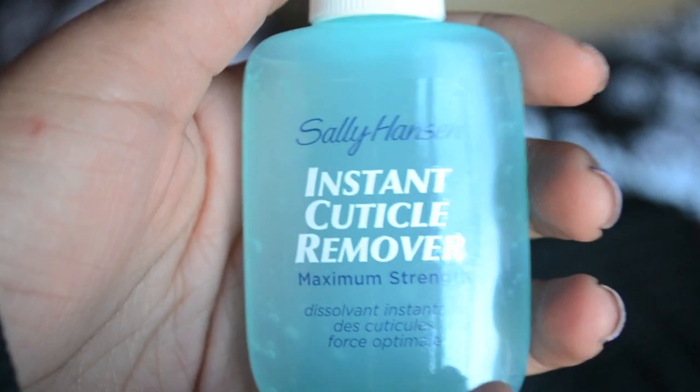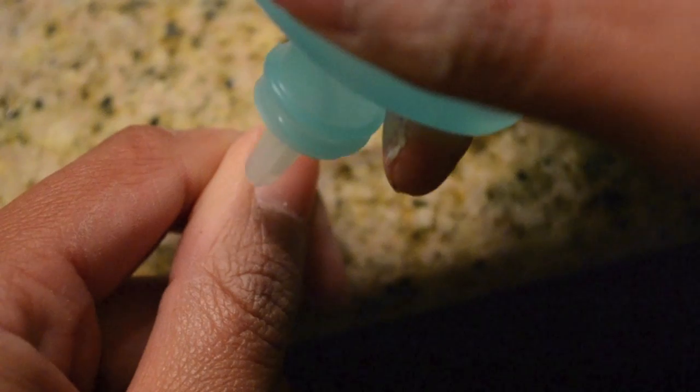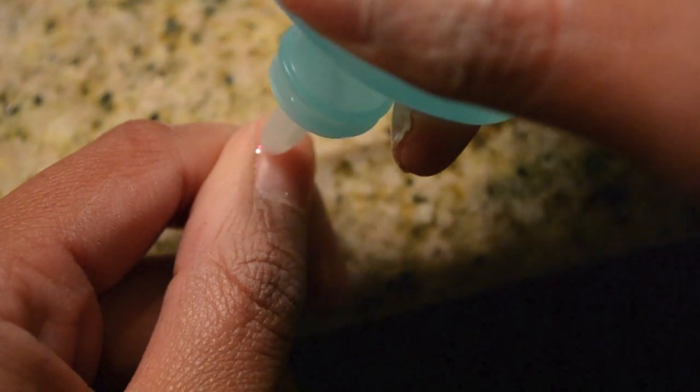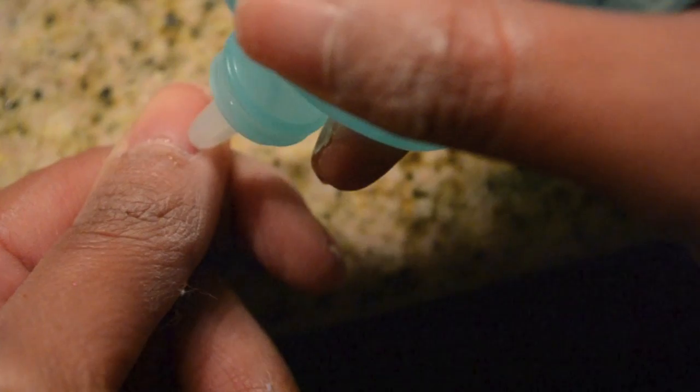I don't really believe in cutting your cuticles off. So what I like to use is a cuticle remover and all I do is place this in the cuticle area and let it sit for a few seconds.